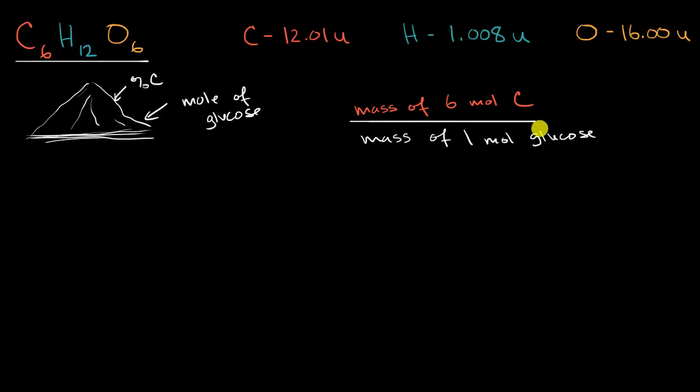Now, what is this going to be? Well, this is going to be equal to, it's going to be in our numerator, we're going to have six moles of carbon times the molar mass of carbon. Well, what's that going to be? Well, we can get that from the average atomic mass of carbon. If the average atomic mass is 12.01 universal atomic mass units, the molar mass is going to be 12.01 grams per mole of carbon. So times 12.01 grams per mole of carbon. And notice, the numerator will just be left with grams.